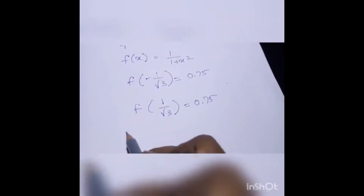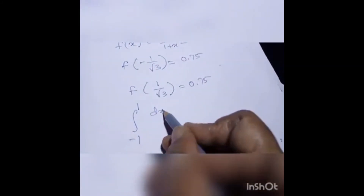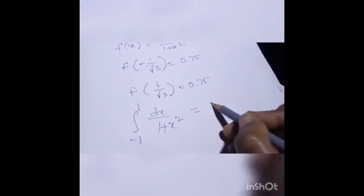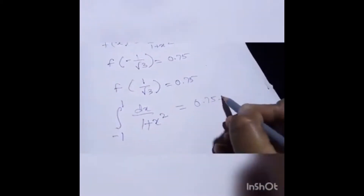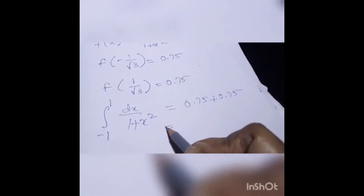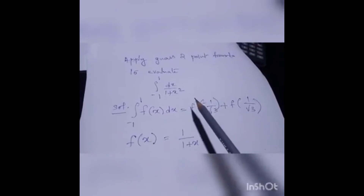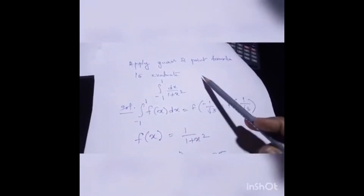Now, the integration of minus 1 to 1 of dx over (1 plus x squared) — that's our question. Substituting in the formula: 0.75 plus 0.75, you will get the approximation 1.5. This is how you find the integration of dx over (1 plus x squared) from minus 1 to 1 using the two-point formula method.